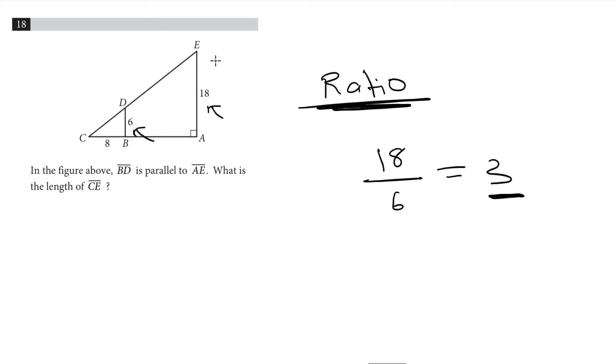So triangle CEA is 3 times larger than triangle CDB. And all sides will be 3 times larger. Now that we know the ratio, we're interested in finding the length of the side CEA.